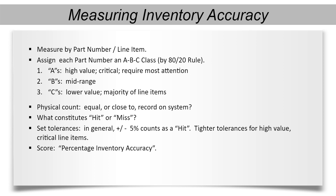Inventory ABC codes are a common way to classify parts, where A is a high-value or critical item that requires the most attention, B is an intermediate cost and criticality item, and C is a low-cost item that could be critical if you don't have it. Most fasteners, for example, would be classified as C items, and an engine assembly would be classified as an A.